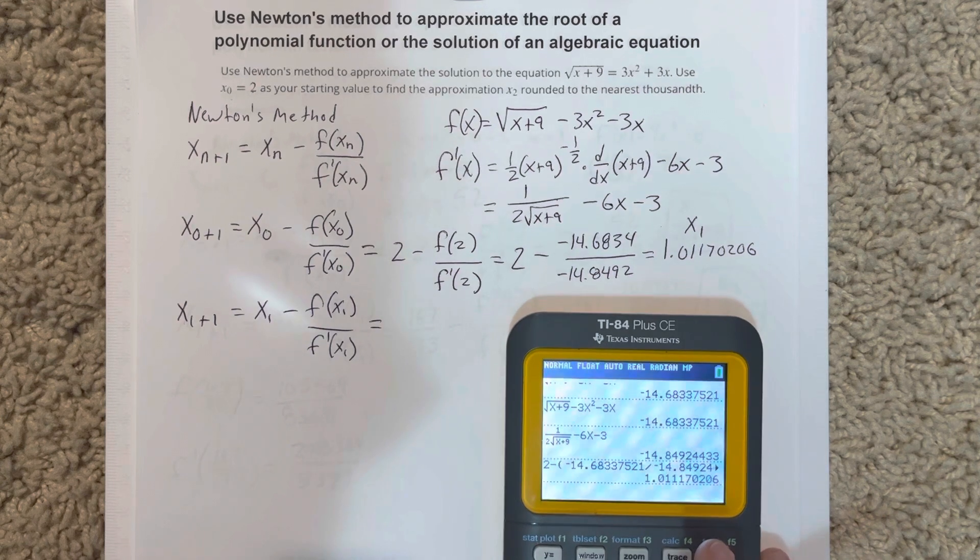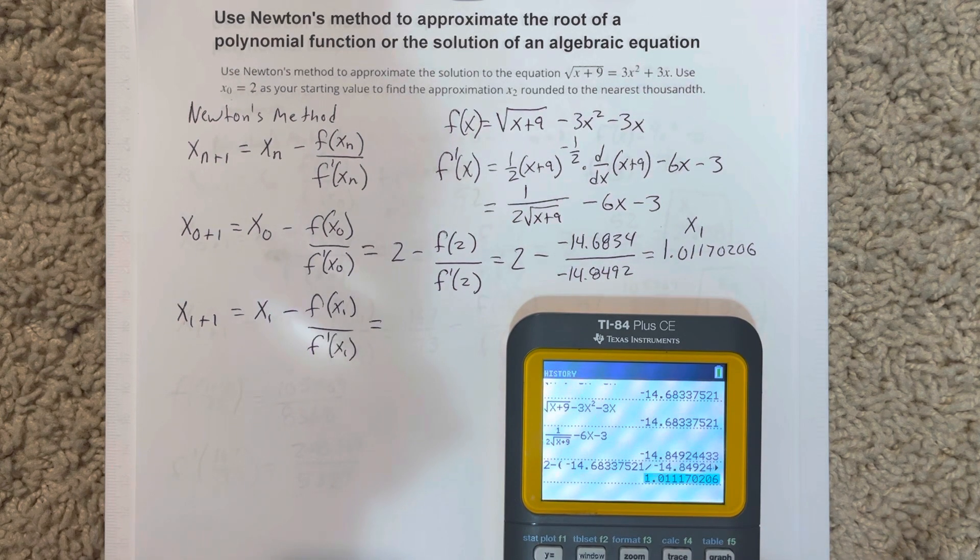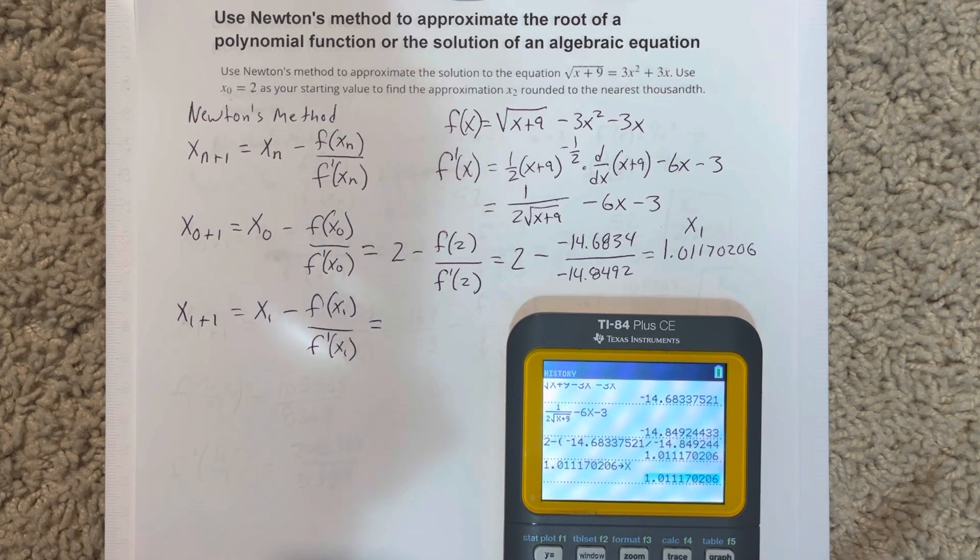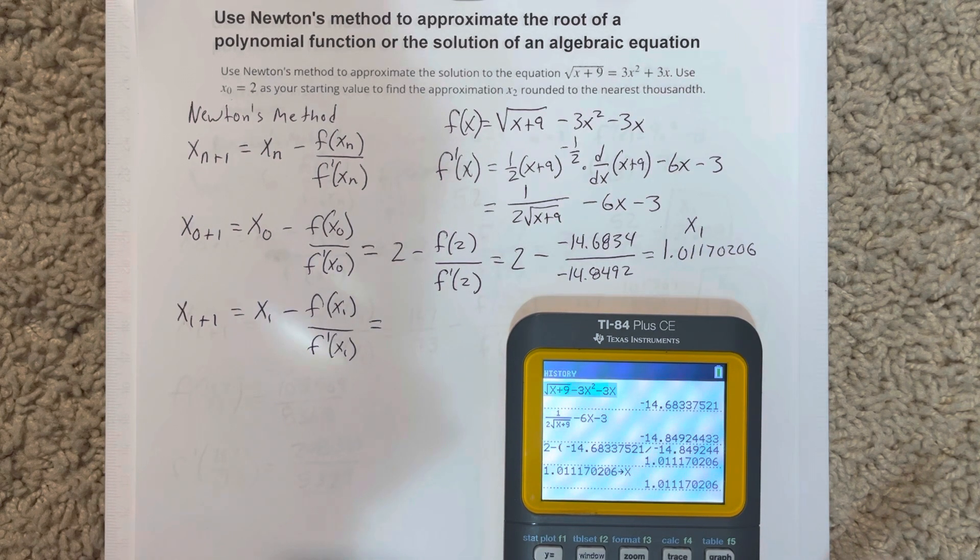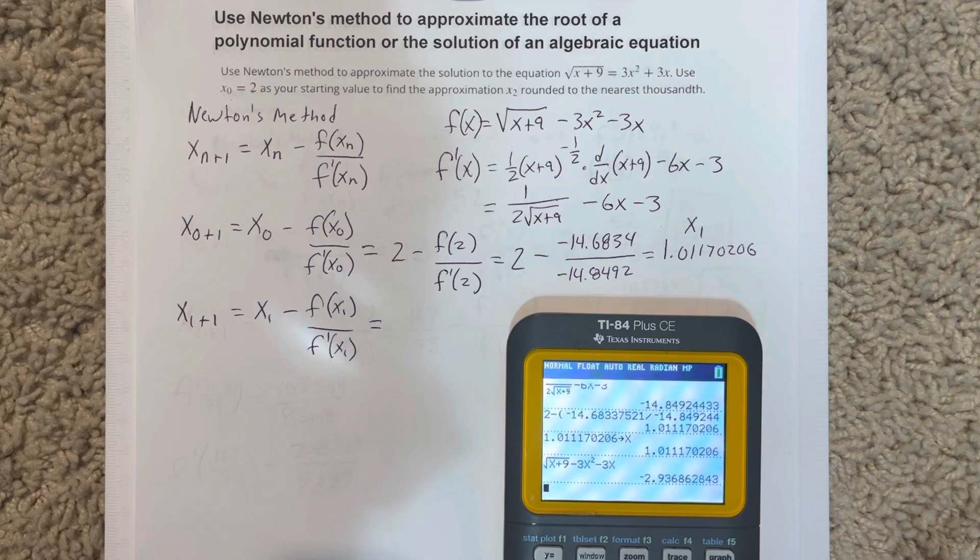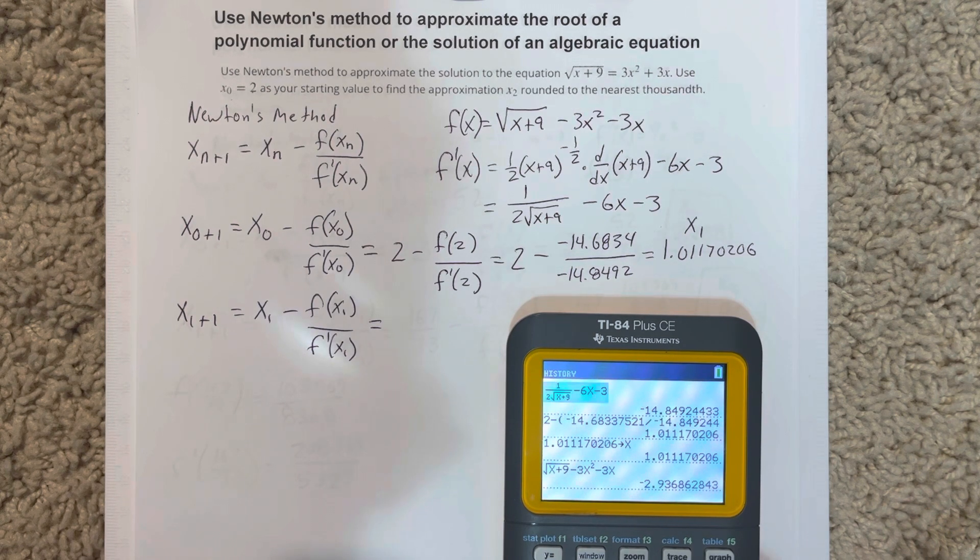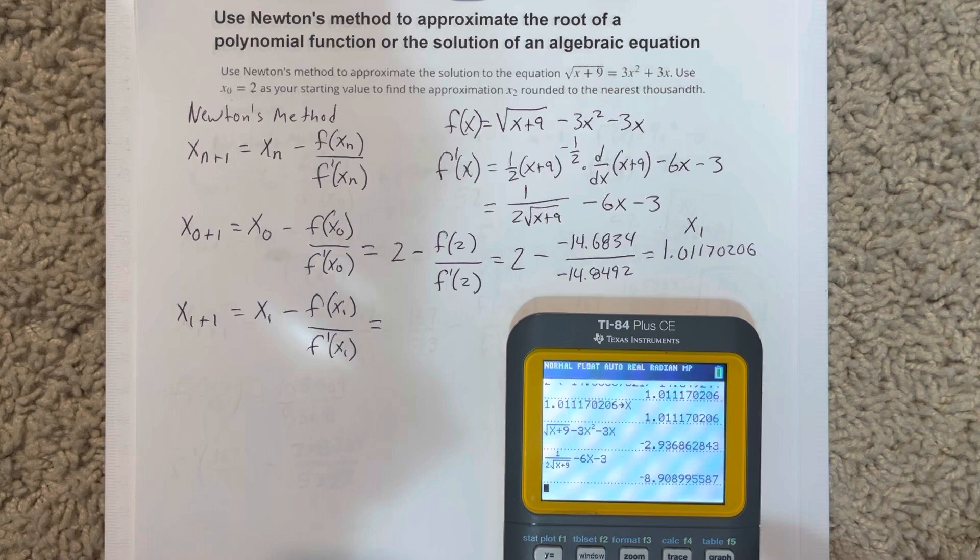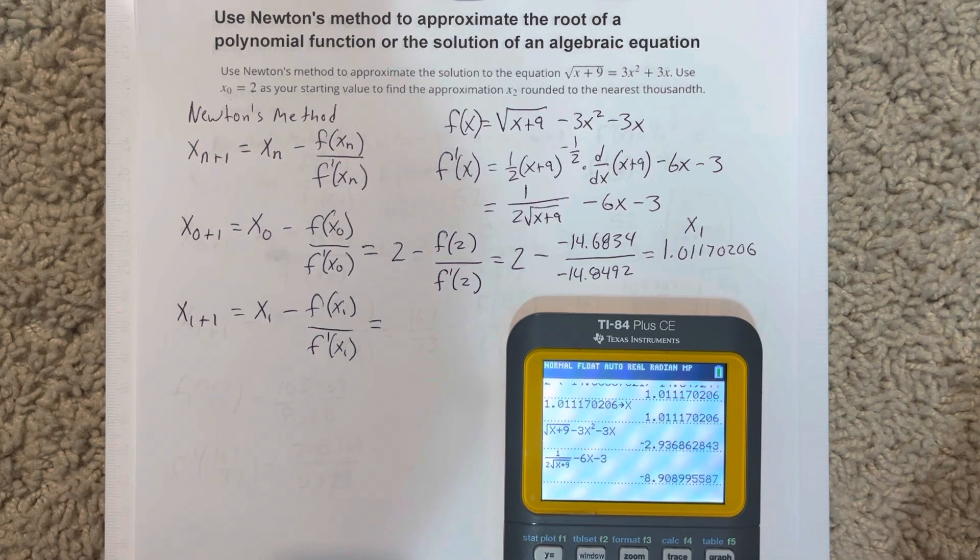I'm going to store it as x. Grab the top function. Grab the next function. So I get negative 2.93 and then negative 8.9.